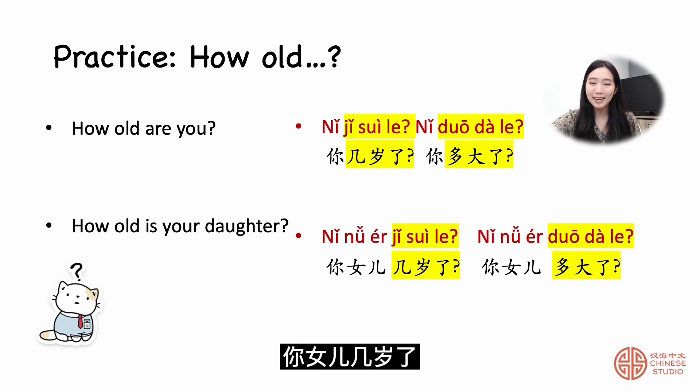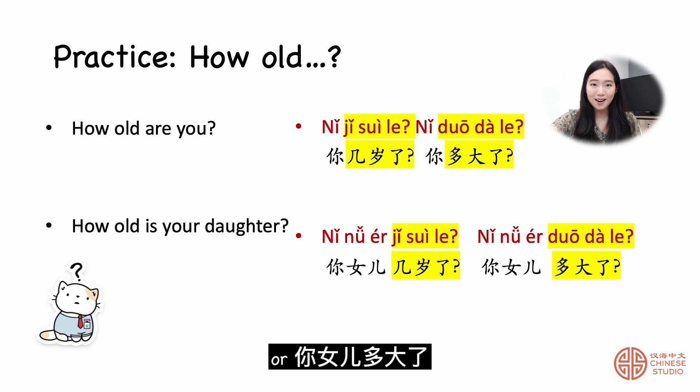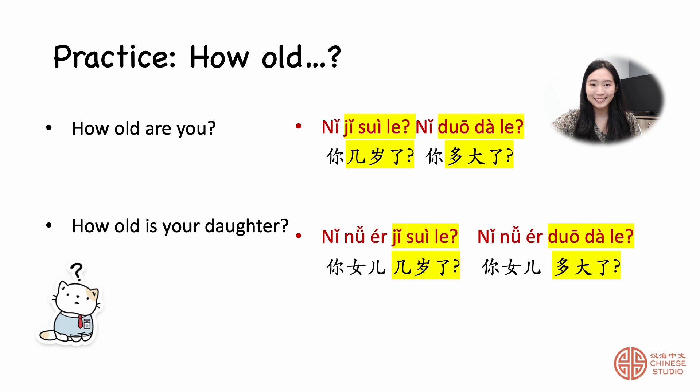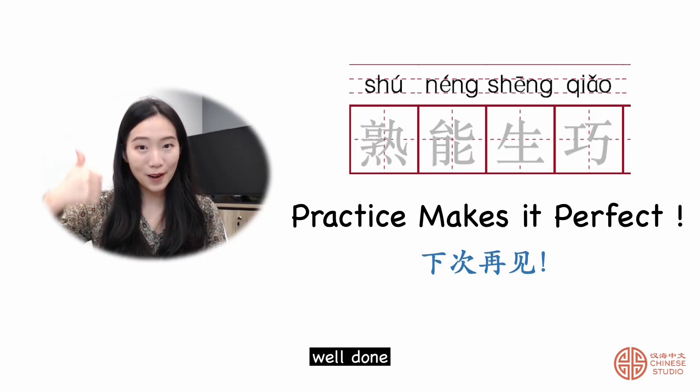And let's try to make interrogative sentences to ask somebody's age. 你女儿几岁了? Or 你女儿多大了?